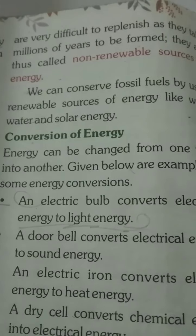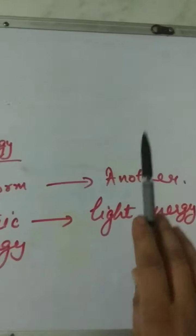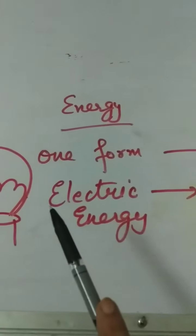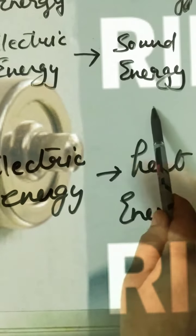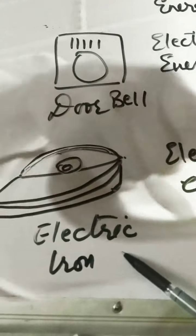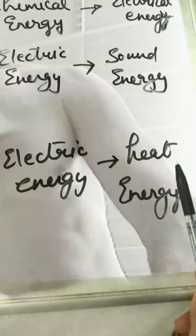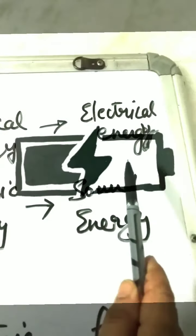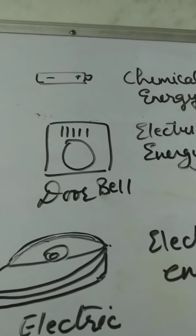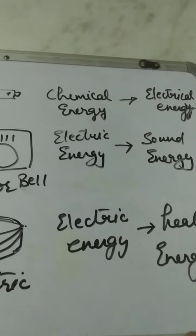Conversion of energy: energy can be changed from one form to another. For example, an electric bulb converts electrical energy to light energy. A doorbell changes electric energy to sound energy. An electric iron changes electric energy to heat energy. A dry cell changes chemical energy to electrical energy. In this way, we can say that energy changes from one form to another.